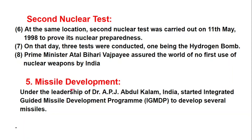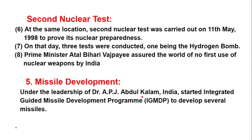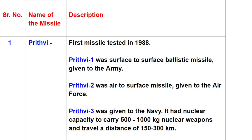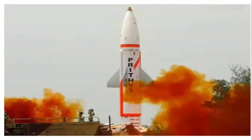Under the leadership of Dr. APJ Abdul Kalam, India started the Integrated Guided Missile Development Program to develop several missiles. The first missile is Prithvi, first tested in 1988. Prithvi 1 is a surface-to-surface ballistic missile given to the army. Prithvi 2 is an air-to-surface missile given to the air force. Prithvi 3 was given to the navy. It had the nuclear capacity to carry 500 to 1000 kg of nuclear weapons and travel a distance of 150 to 300 km. A ballistic missile depends on gravity to reach its target.